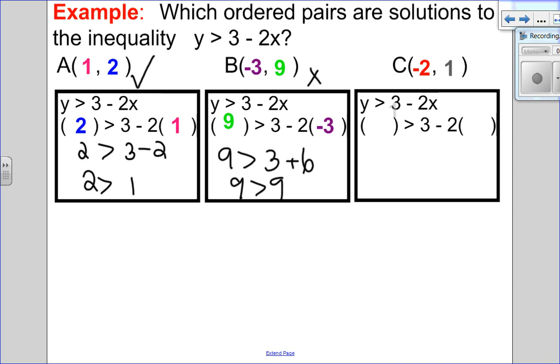Let's try our last one. Substitute y, substitute x. I have 1 greater than 3. Negative 2 times negative 2 is positive 4. 1 is greater than 7. Well, that's not true. So only point A is a solution to that inequality.